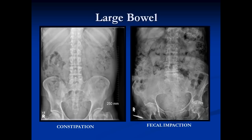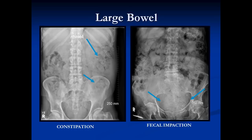When we look at plain films, we often see fecal material. In patients with constipation there's usually more stool than normal — you can see the black air incorporated within white soft tissue like little bubbles. This patient is probably constipated because he has a fair amount of stool. When someone is fecally impacted, they have stool throughout their large bowel and in particular in their rectum. Here the rectum is greatly distended with amorphous material containing air — this is fecal impaction.